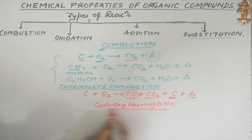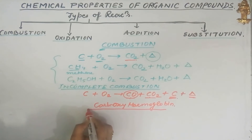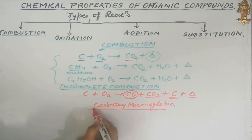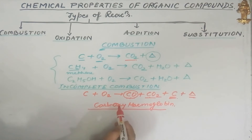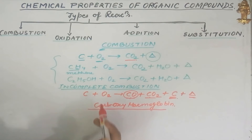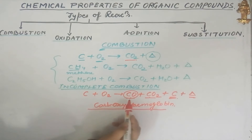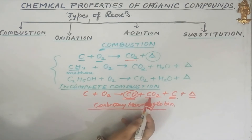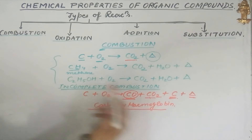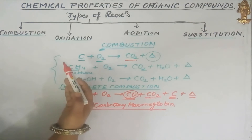Carboxyhemoglobin is very harmful for the body because it decreases the oxygen-carrying capacity of the blood. That is why carbon monoxide is more harmful than carbon dioxide.